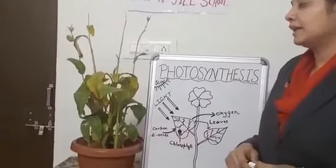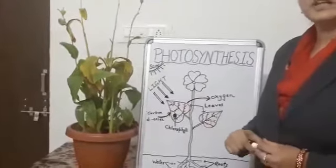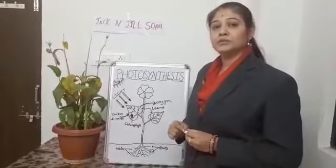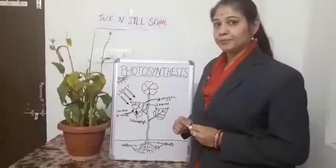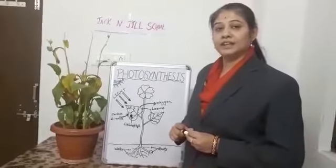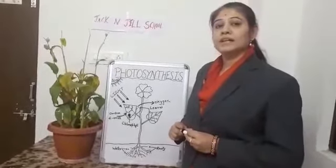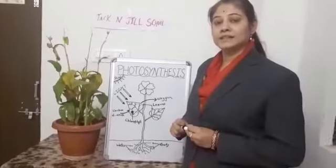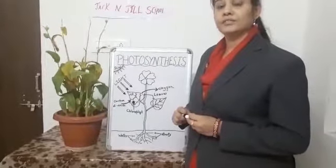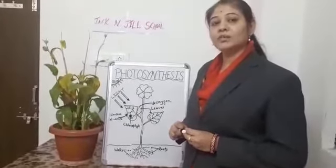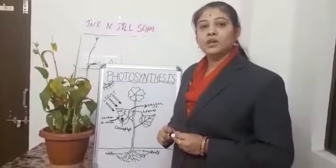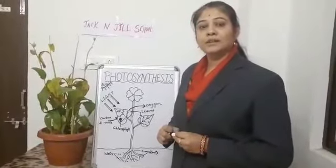The main part of the plant is the leaf. Leaf ko plant ka kitchen bhi kaha jata hai — because it makes food for the plant. Most plants and trees have green leaves because of the presence of a substance called chlorophyll, which makes a leaf green. Chlorophyll is a pigment; it absorbs sunlight from the sun.